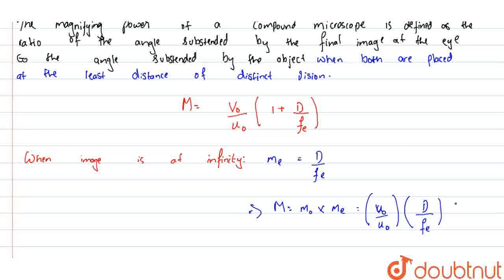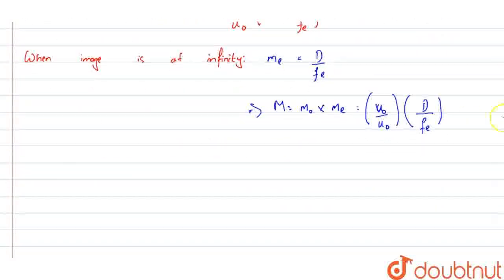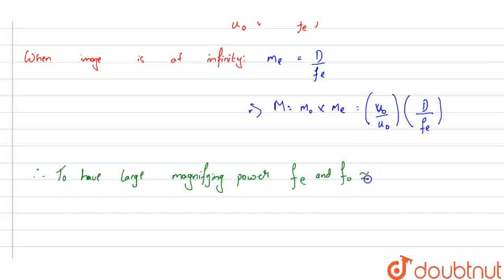To have a large magnifying power, both Fe and Fo, which is similar to U0, should have small values. Therefore, to have large magnifying power, the focal length of eyepiece and focal length of objective, which is similar to object distance for small objects, should have small values.